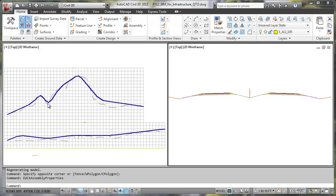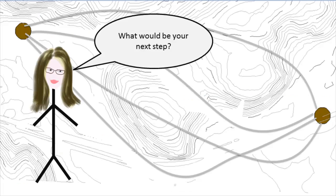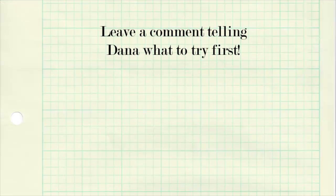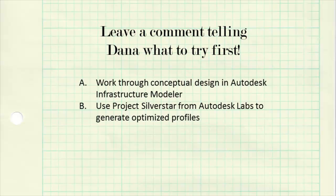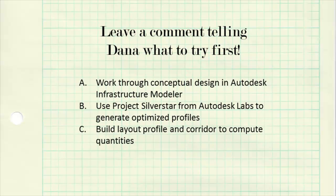We also have a typical assembly over on the right that Dana can use for some early design. So what would be your next step? Should she work through some concepts in Infrastructure Modeler, download Project Silver Star from Autodesk Labs to generate some optimized profiles, or just go ahead and build that corridor to compute initial quantities?